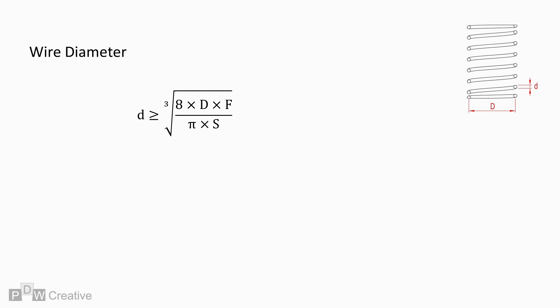Wire diameter is calculated as follows: Diameter is equal to or greater than the cube root of 8 times mean diameter times force over pi times wire stress.